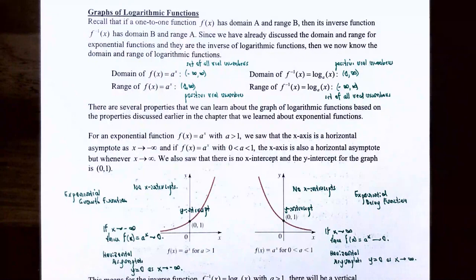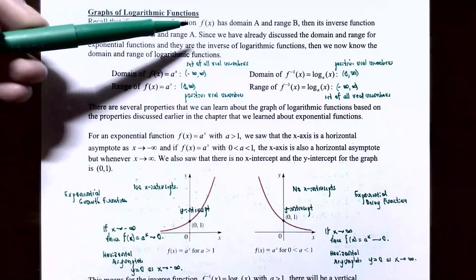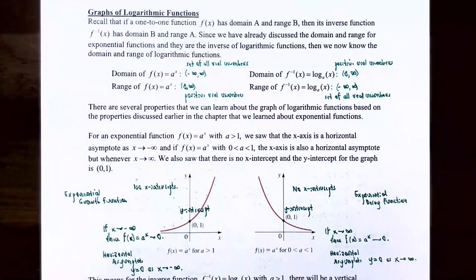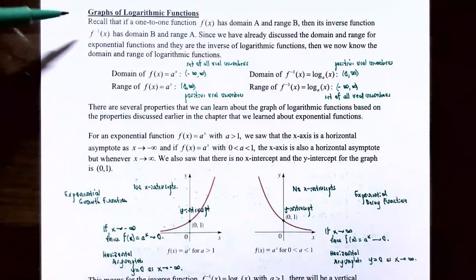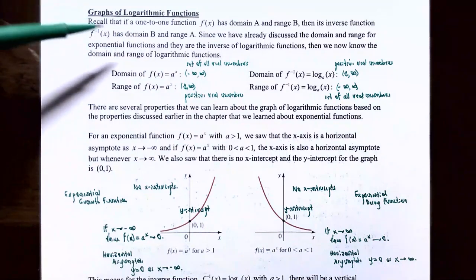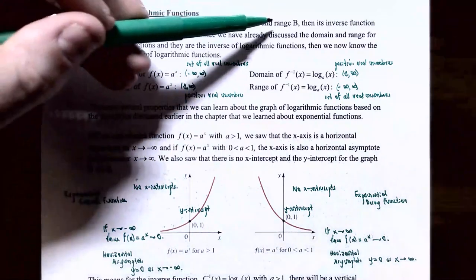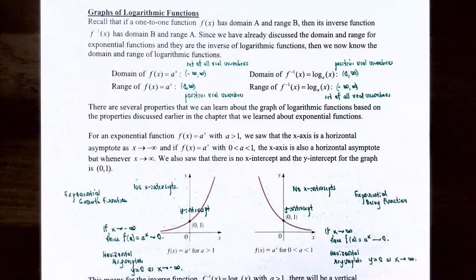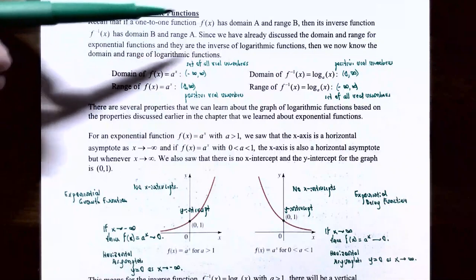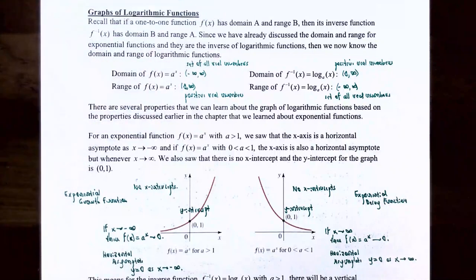Let's talk about graphs of logarithmic functions. Suppose that you have a function f of x which has domain a, range b, and it's a one-to-one function. Then it does have an inverse function, and the inverse function f inverse of x has domain b, which was the range of the original function f of x, and the inverse function will have range a, which was the domain of the original function f of x.